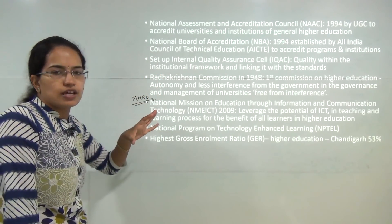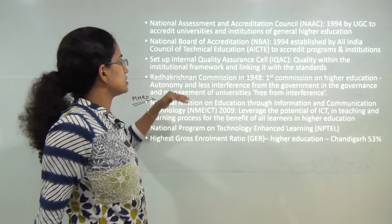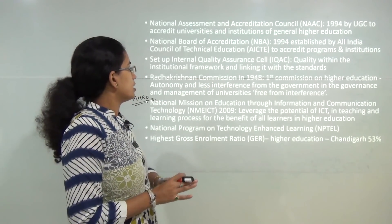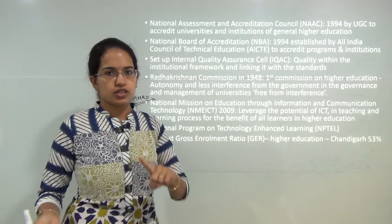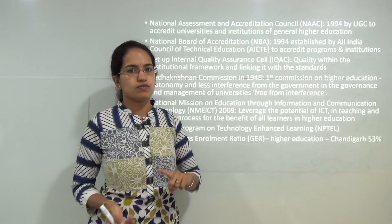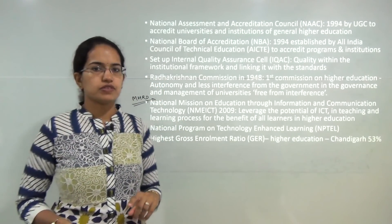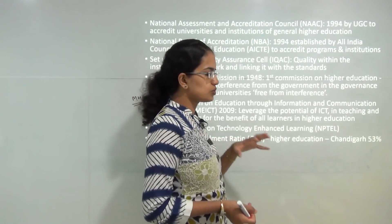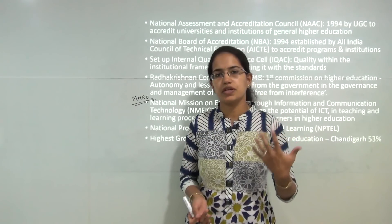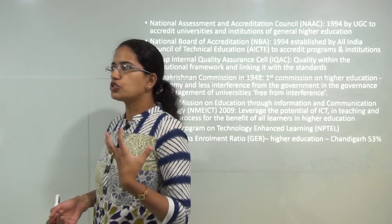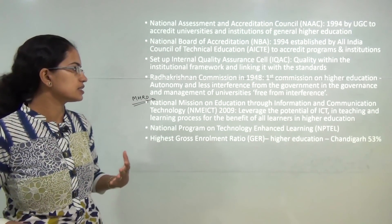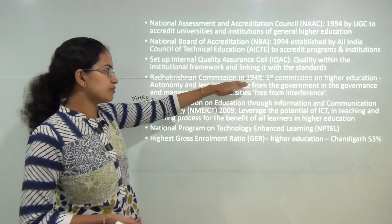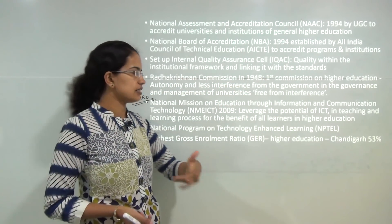To assess the quality of standards in higher education there is the Internal Quality Assurance Cell that has been established. The first commission on higher education was started in 1948, known as the Radhakrishnan Commission. It talked about universities being free from any political interference, and that basic idea still continues today.